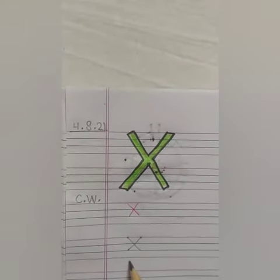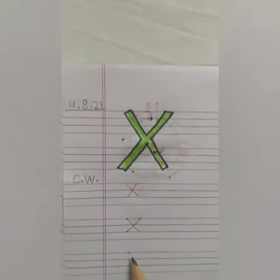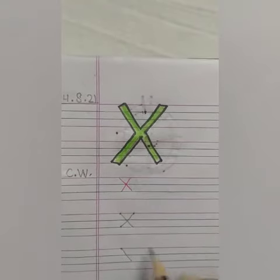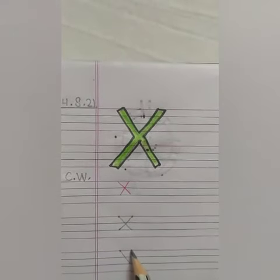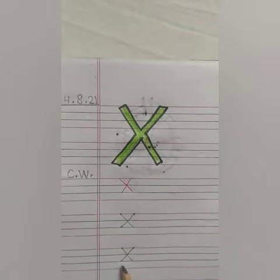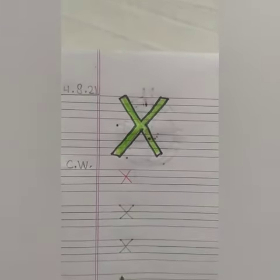X for xylophone. Again we will put a single dot, make a slanting line and again slanting line and touch it to the lower blue line.